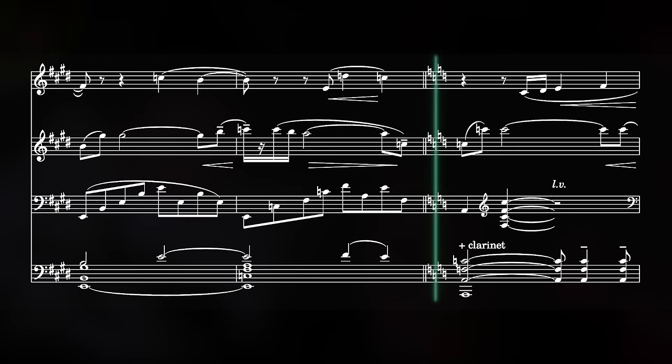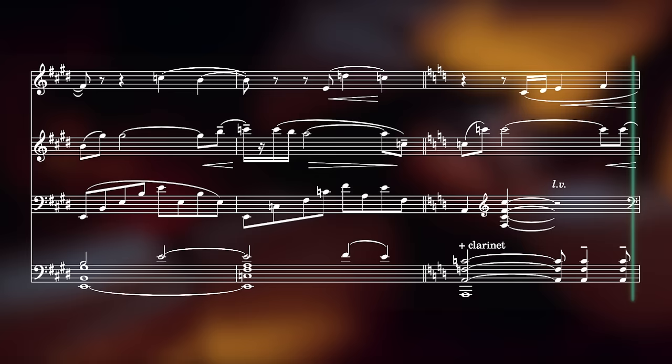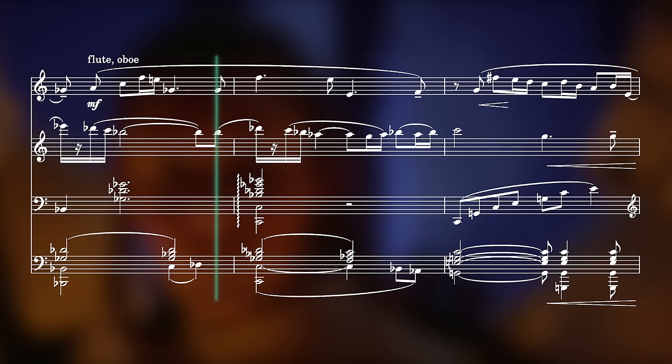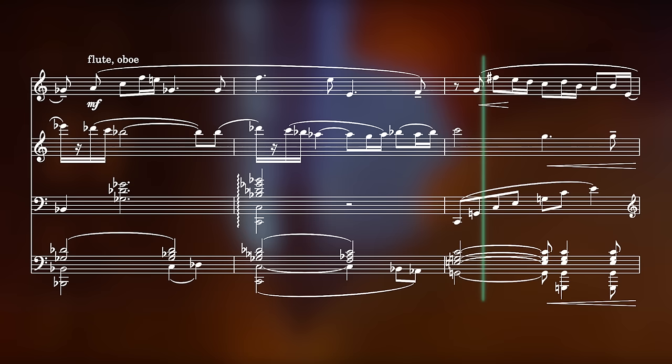Interest is also added with an additional countermelody in the flutes and oboes, as well as a richer harmony in the string writing. There's more disagreement now between the melody and the underlying harmony, with the bass part often separated from the melody by dissonant intervals, like minor 9ths.